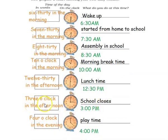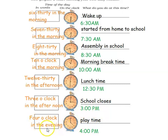The next activity is 3 o'clock in the afternoon. The hour hand should point to 3 and the minute hand should be at 12. School closes at 3 o'clock in the afternoon, so we write it as 3 p.m. The last activity is 4 o'clock in the evening. The shorter hour hand should point to 4 and the longer minute hand should point to 12. It is play time. Since it is 4 o'clock in the evening, we write it as 4 p.m.